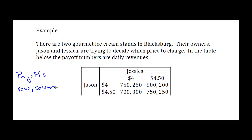Let's look at how to solve for a Nash Equilibrium. The first way is to look at every possible cell in the table and see whether it satisfies the definition — that neither player wants to change their strategy given that the other player holds their strategy fixed. Let's start with the cell 700, 300, where Jason's playing $4.50 and Jessica's playing $4. Could that be a Nash Equilibrium?